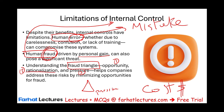The second component is rationalization. Rationalization means the person can tell themselves it's okay to commit fraud — they can talk themselves into it. They know it's wrong, but somehow they justify it: 'I didn't get that promotion,' 'they're not paying me enough,' 'they're treating me unfairly,' 'my boss is a pain.' Even if you have pressure and can rationalize it, that doesn't mean you will commit fraud. You need the third component.